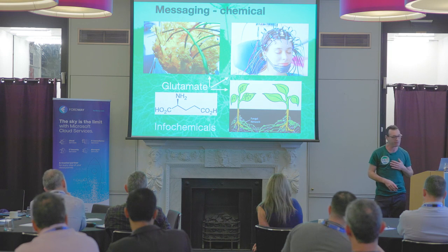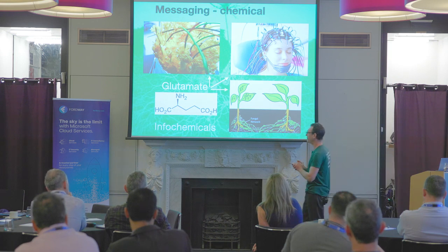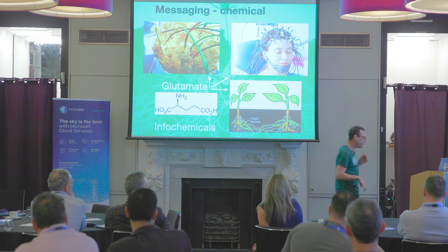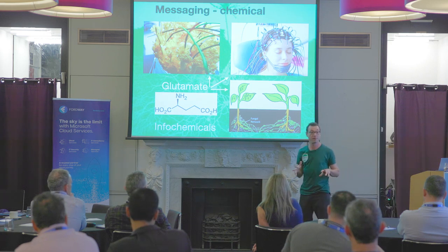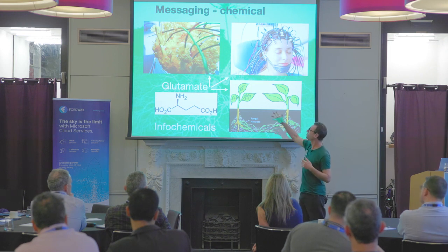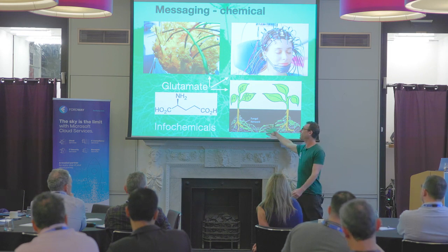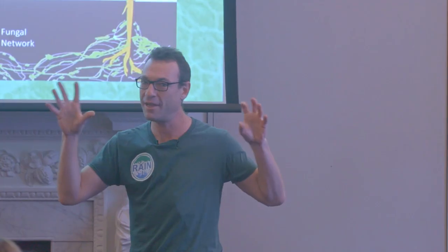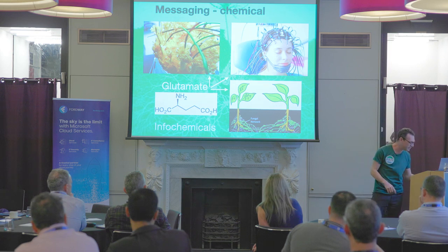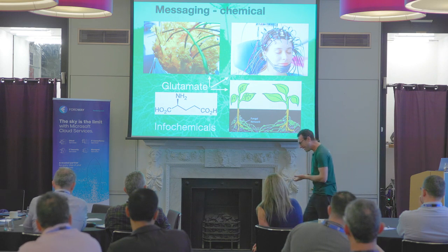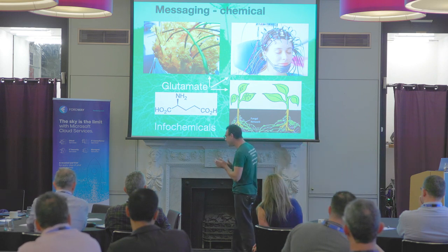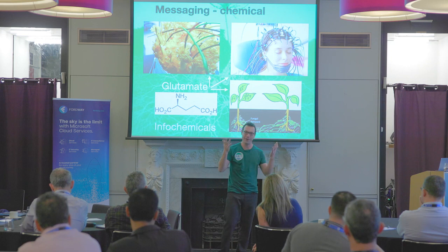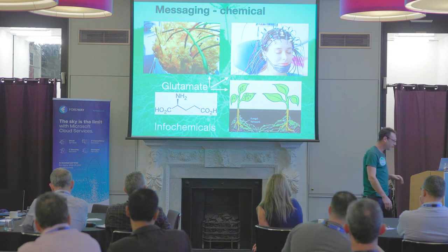We can also talk about chemical messaging. If a tree or plant — a broad bean, for example — is attacked by aphids, it will produce something which attracts ladybirds to eat the aphids. But it also tells its neighbours through the mycorrhizal root network that they should start turning on the genes that produce that defence chemical. These are called infochemicals, and you can probably see a connection there with how antivirus software works. Glutamate is the oldest of the neurotransmitters, and it's also found in fungus and in plants — so you've got these very similar networks communicating with exactly the same neurotransmitter across our brains and all through the world.